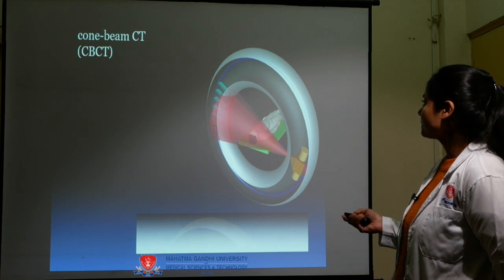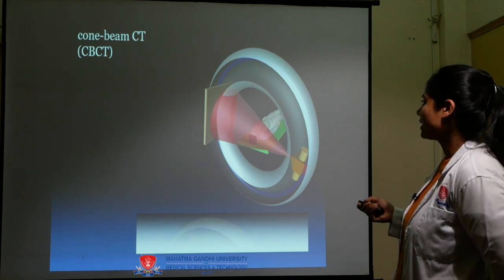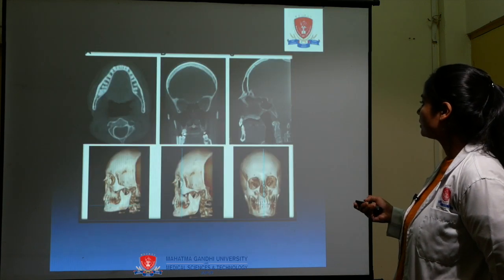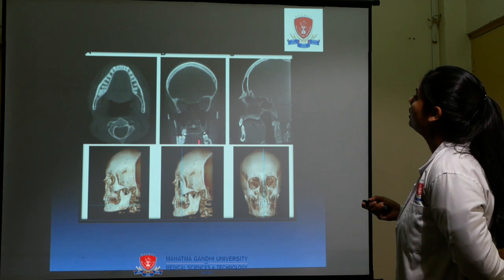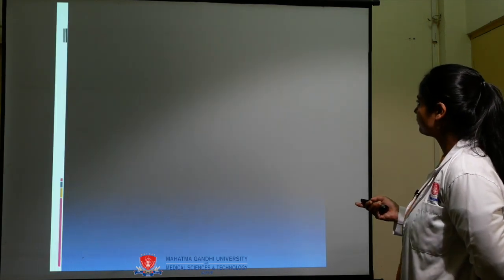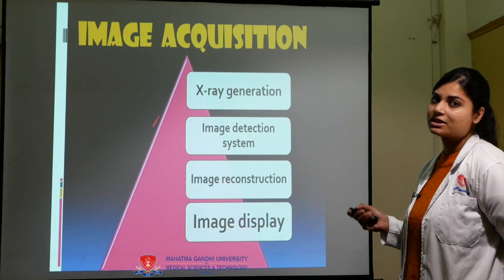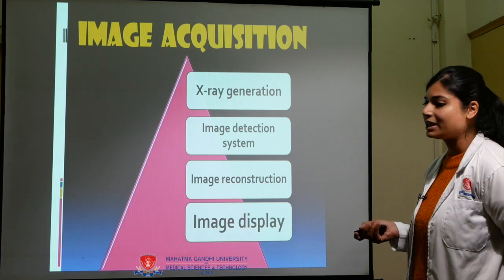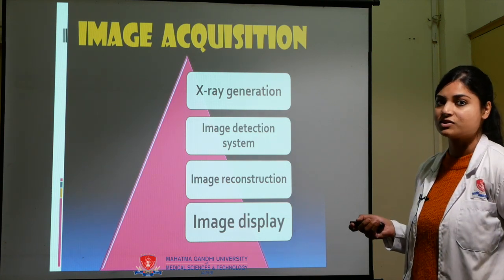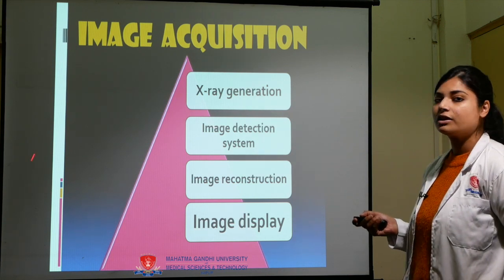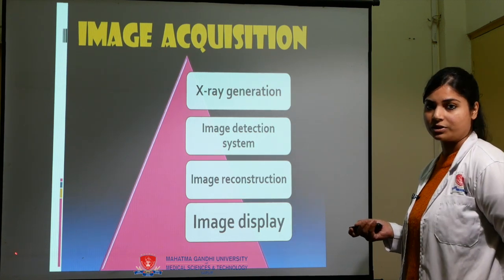This is a cone beam CBCT unit showing the X-ray source, cone beam, and flat panel detector attached to the gantry to capture the image. The CBCT captures data in different planes: the axial plane, coronal plane, and sagittal plane. Image acquisition occurs in steps: first, X-ray generation in a cone beam; then image detection on the flat panel detectors attached to the gantry; then image reconstruction with the help of projection bases; and finally, image display on the computer as secondary reconstruction.